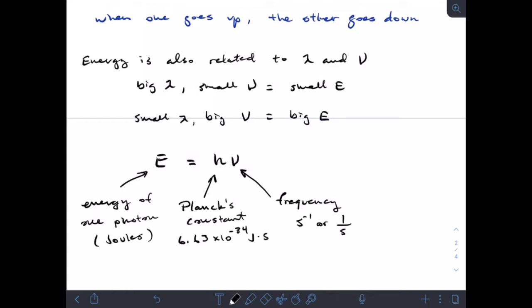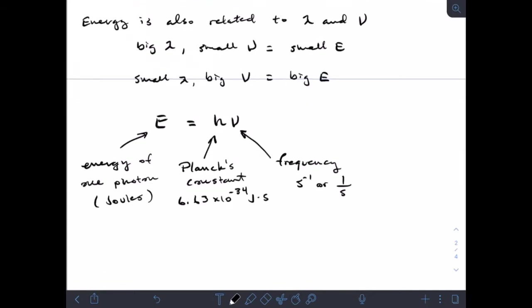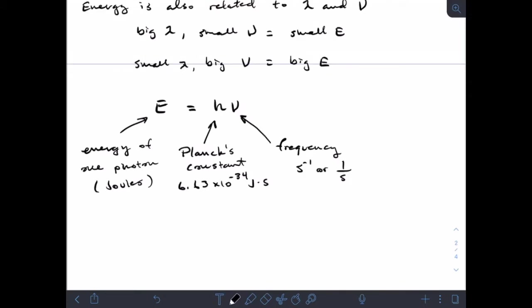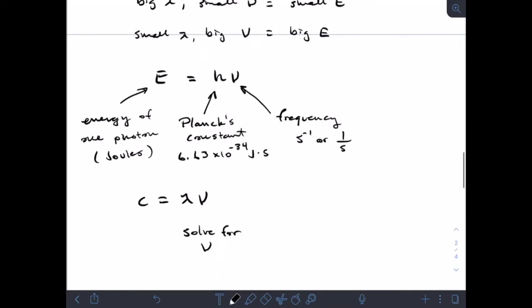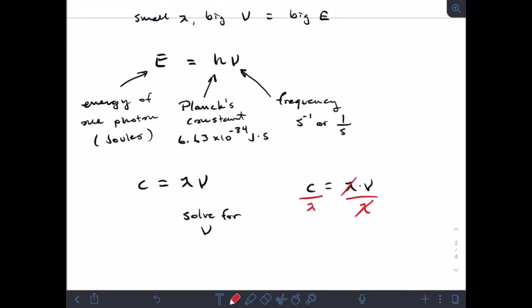Now that we've covered all that, I want to talk about one more thing. If I take my equation for the speed of light and let's say I want to solve for frequency, what I'm going to do is get frequency by itself. If I divide both sides by λ, as long as I do it to both sides it's okay, then my lambdas cancel out on the right side and what I get is c over λ equals ν. This is how you can rearrange these equations at any point that you need to.